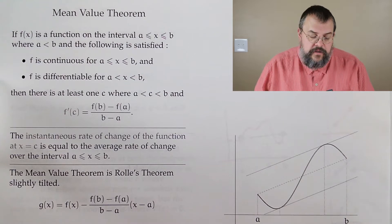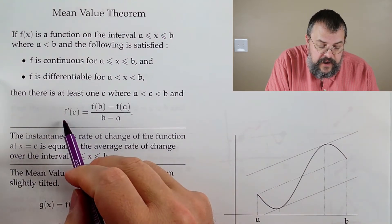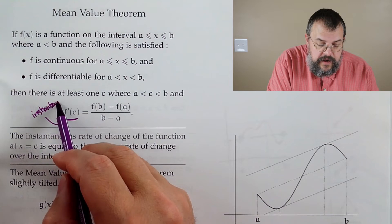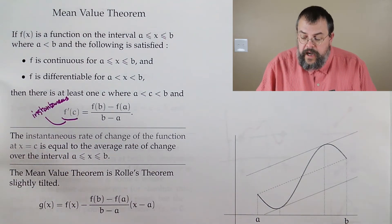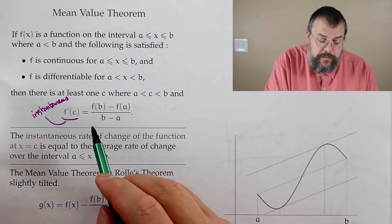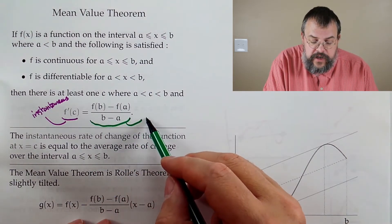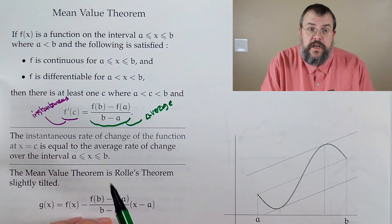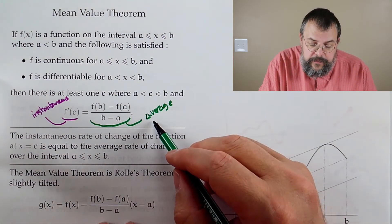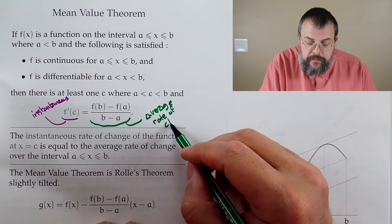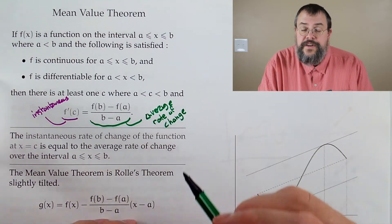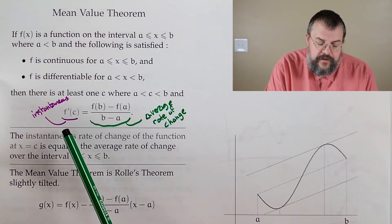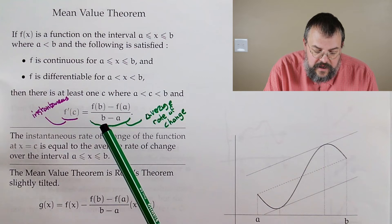What do you notice? The left-hand side, f'(c), is an instantaneous rate of change — what's happening at C. The right-hand side, [f(b) - f(a)] / (b - a), is the average rate of change. You see the word average — that's where the word mean is coming from, because mean is a type of average. So the Mean Value Theorem says there has to be some place where your instantaneous rate of change equals your average rate of change.